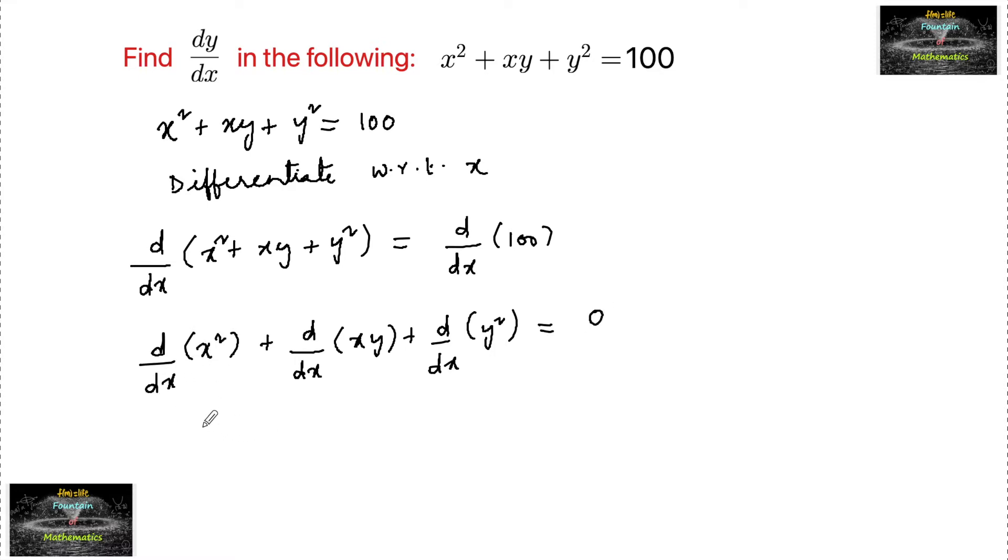zero. Differentiation of x² gives 2x, and differentiation of xy let's use product rule: uv' = u·v' + v·u'.